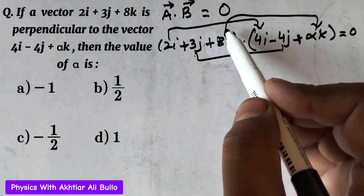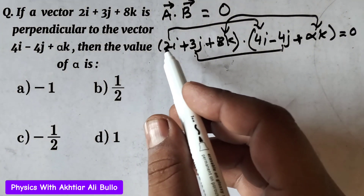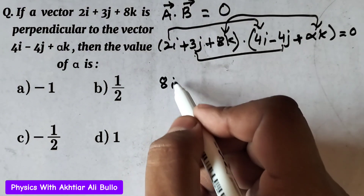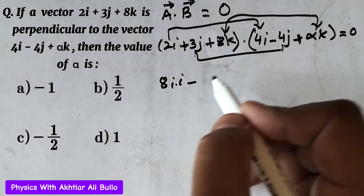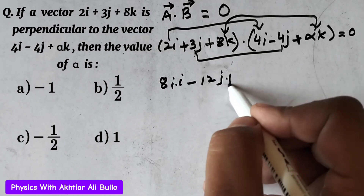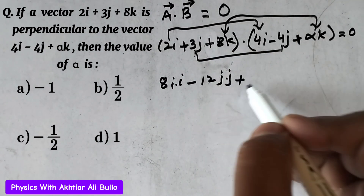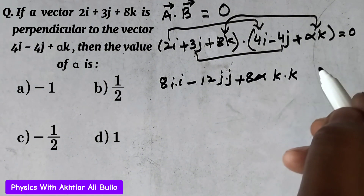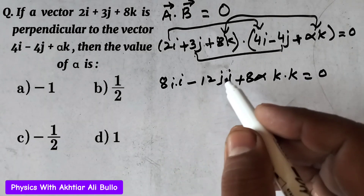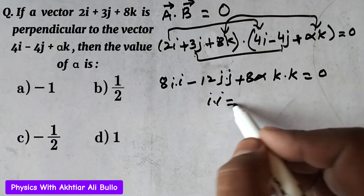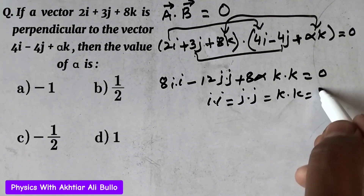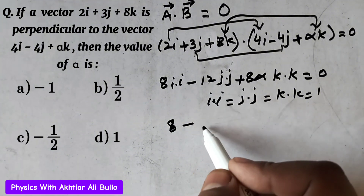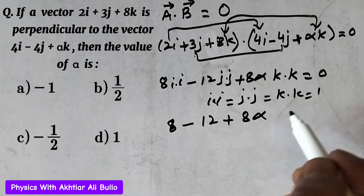So 2i into 4i gives 8 (i dot i), plus 3 into minus 4 gives minus 12 (j dot j), plus 8 into alpha gives 8 alpha (k dot k), equals 0. Since i dot i equals j dot j equals k dot k equals 1, this simplifies to 8 minus 12 plus 8 alpha equals 0.